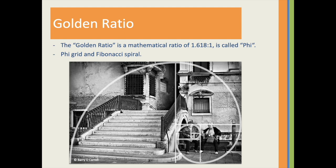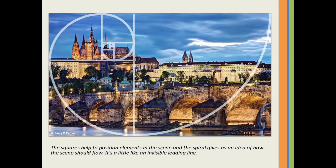This is a tricky one, called the Fibonacci spiral. We can see it again here — all our elements are positioned and it drives our eye through the bridge and above to the main church that is lit.